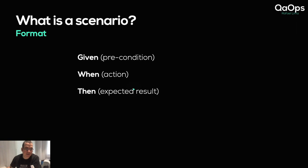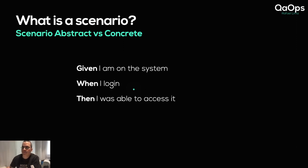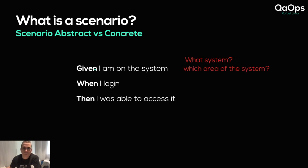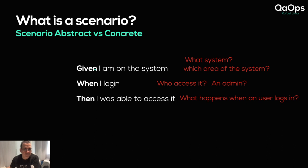Here is a concrete example: Given I am on a system, when I log in, then I was able to access. Seems straightforward, but what system are we talking about and which area of the system? What path of the domain? Who accessed it — was it an admin or not? What happens when a user logs in? You can see that was too simplistic.